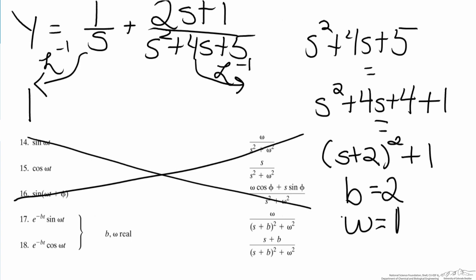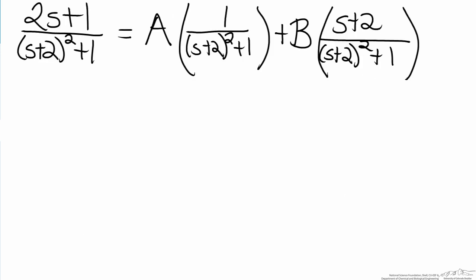But looking at this we hit a little bit of a problem. If we are to substitute omega and b in, what we have is 1, and for this part here we have s plus 2. The problem is that our numerator for this is 2s plus 1. So what we are going to have to do is find a way to turn 2s plus 1, our numerator, into a linear combination of the 1 and the s plus 2.